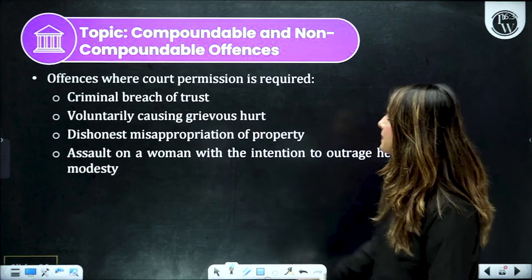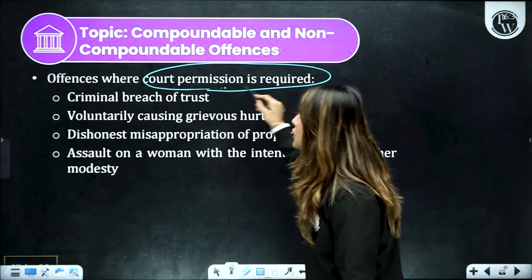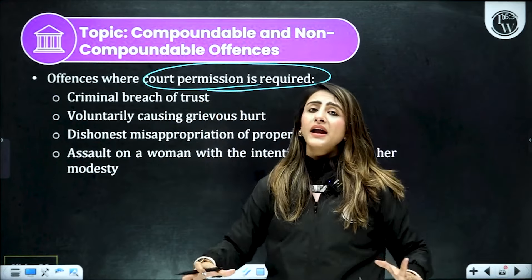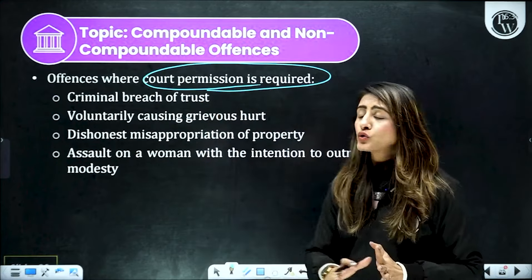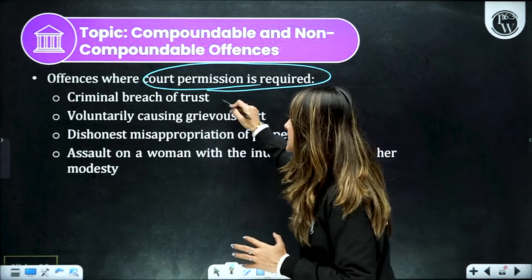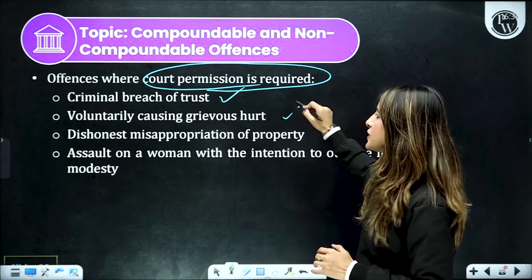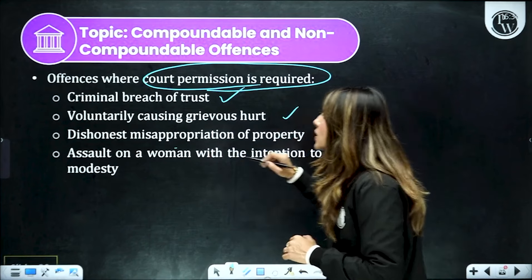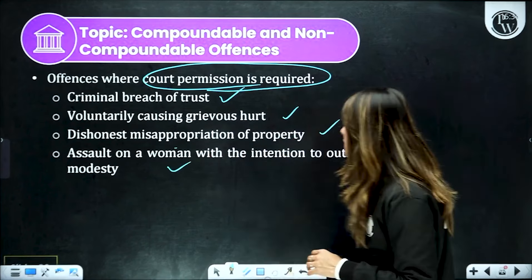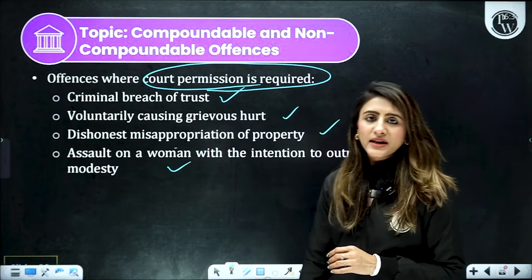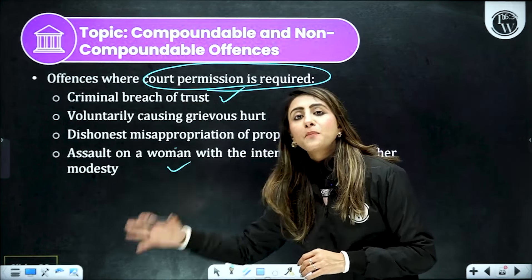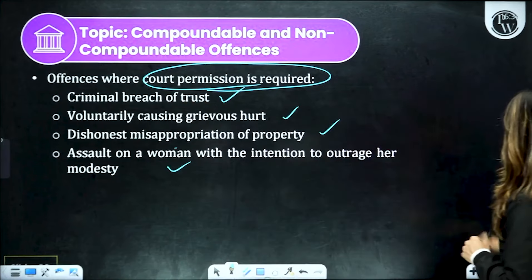Iske baad aate hain offenses where permission is required — kon-konse type ke offenses hain jahaan par bina court ke compounding nahi kar sakte. Toh iska matlab hai thode se serious offenses mein aajayenge — jaise ki criminal breach of trust, voluntarily causing grievous hurt, dishonest misappropriation of property, assault on woman with the intention to outrage her modesty. Is tariqe ke offenses mein court ka permission mandatory required hai for compounding.